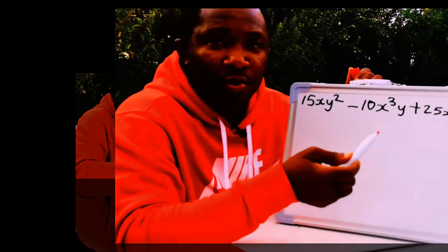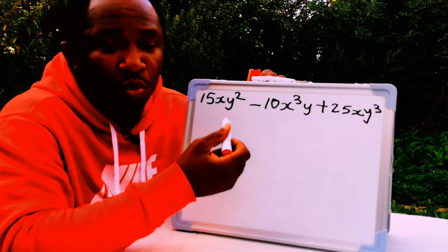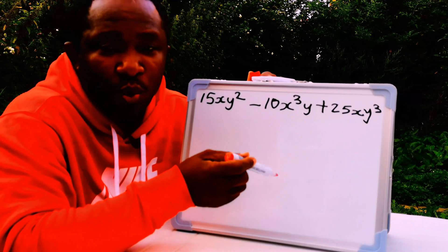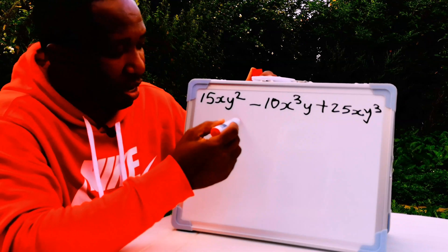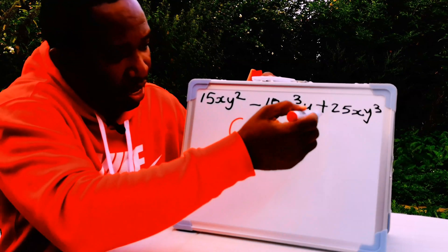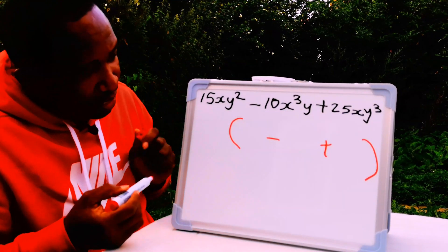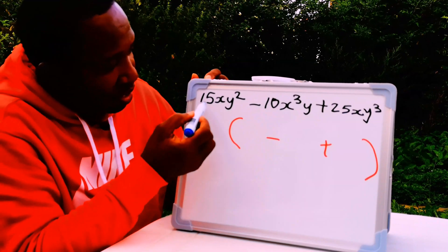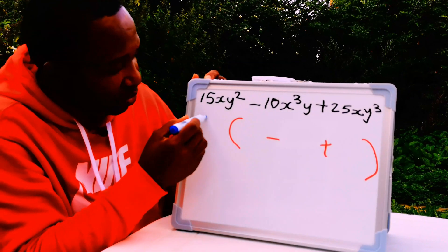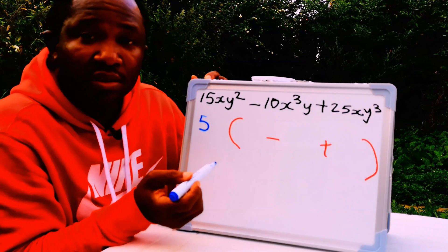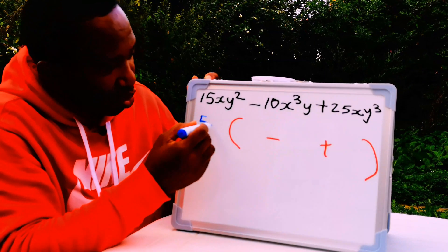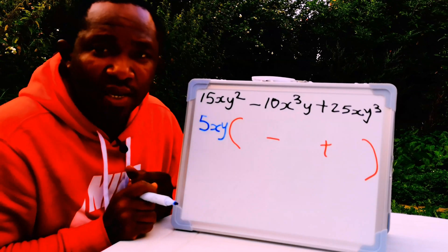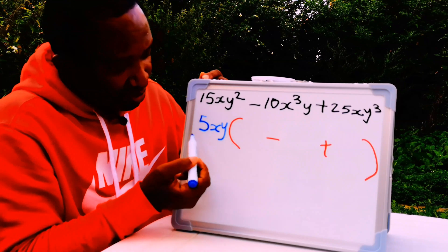Here we have 15xy squared minus 10x cubed y plus 25xy cubed. We have a minus and a plus. Looking at all three terms, the common factor is 5. Also x is common in all three terms, and y is common in all three terms. So 5xy is the common factor.